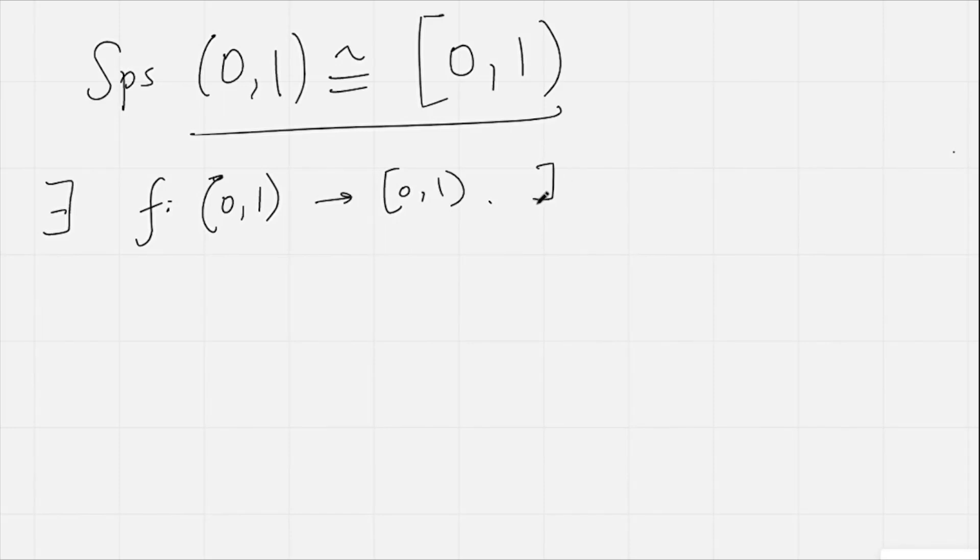Well then, there exists some point x₀, such that f(x₀) = 0, because of course it's an onto map. So f(x₀) = 0.